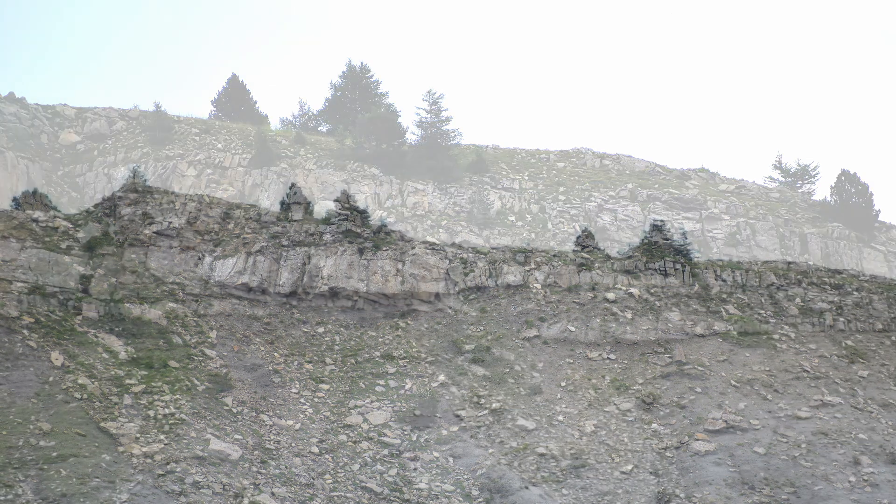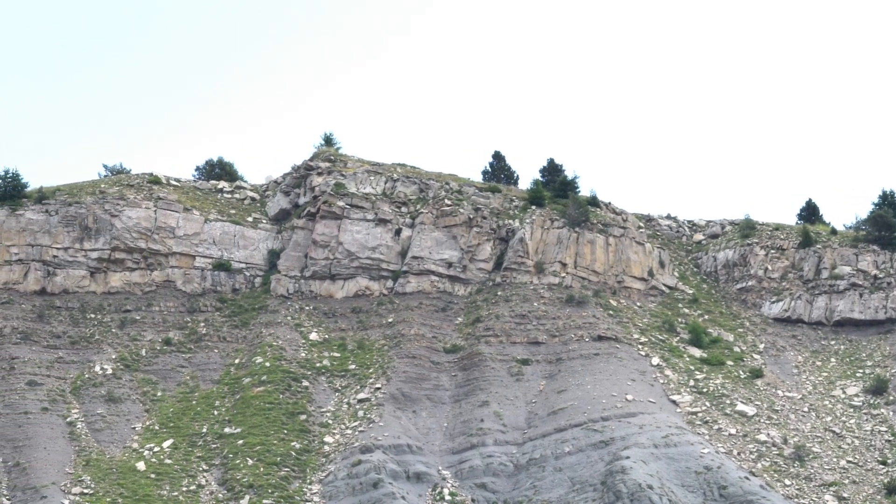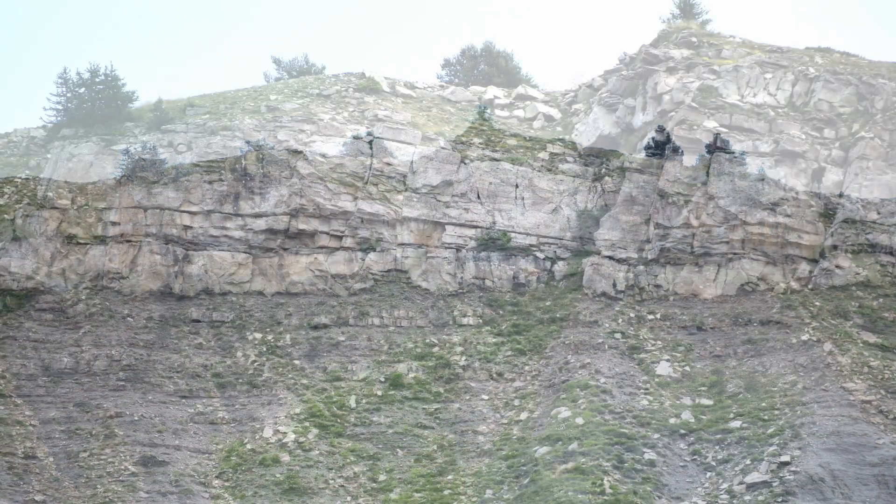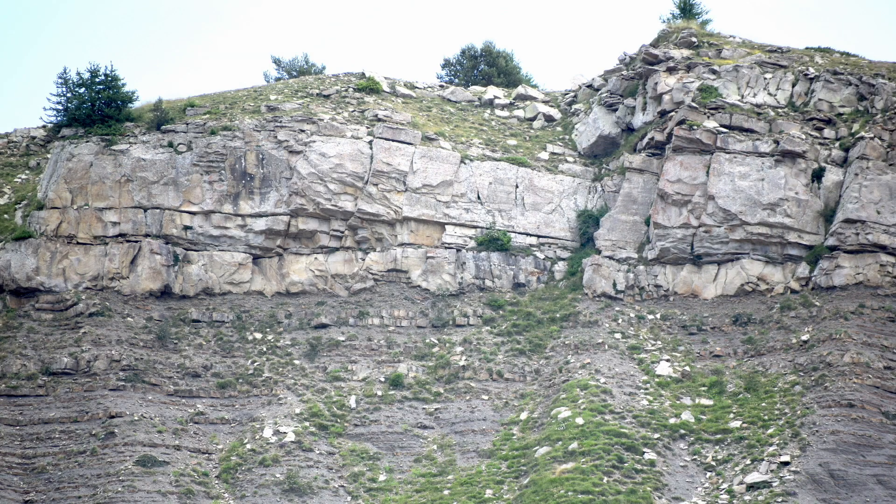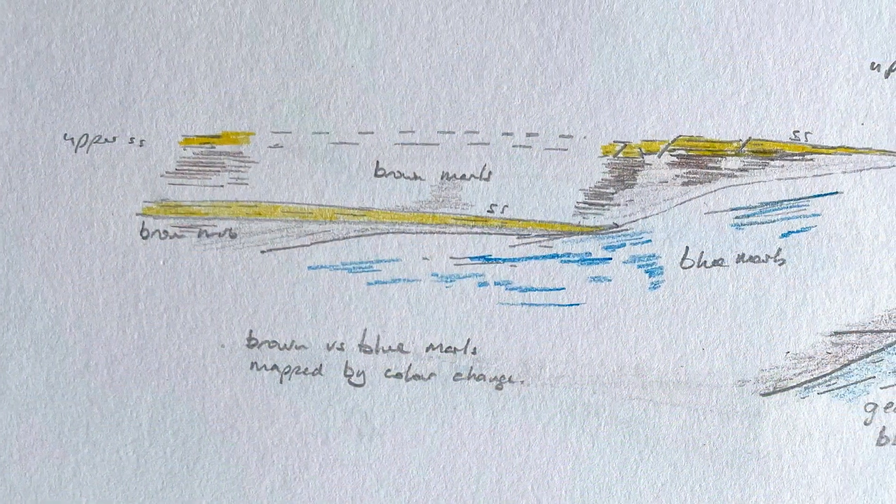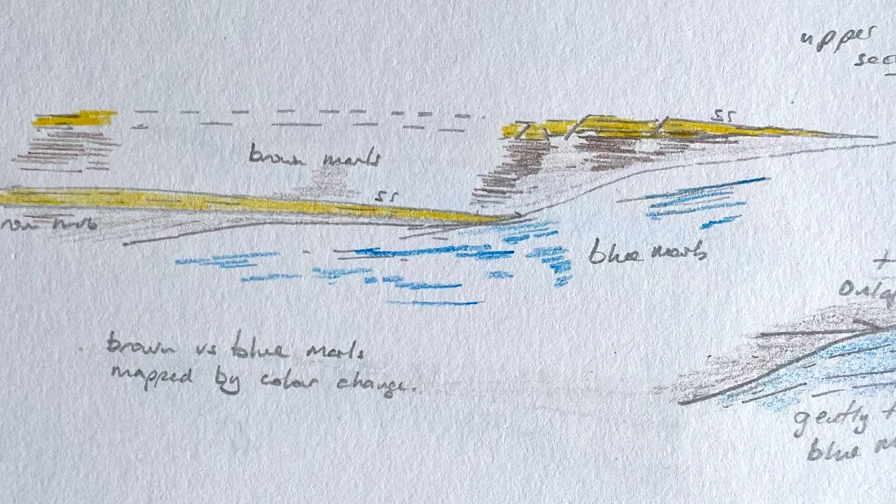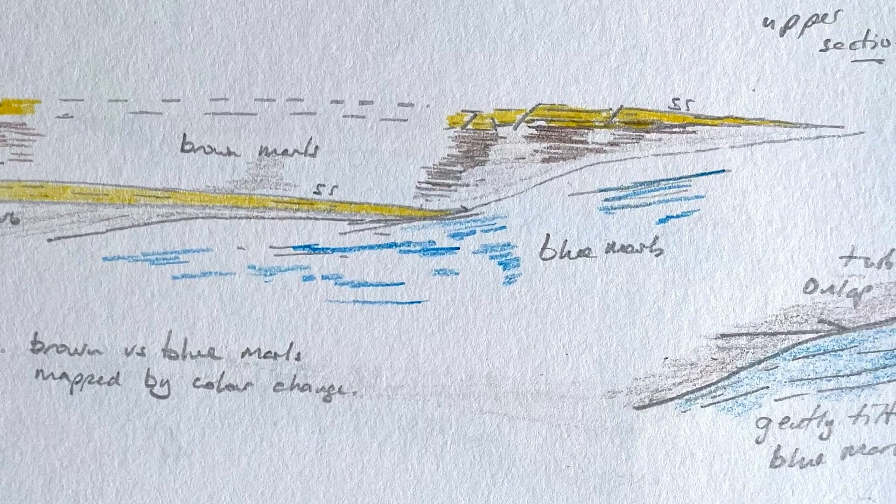Let's look further along. And here the base of a sand bed cuts up and down on quite short distances into the thin bedded substrate. So erosion at the base of this sandstone package. We can trace the thin bedded units, that brown material. And we can see that they're oblique to the unconformity onto the blue marl.